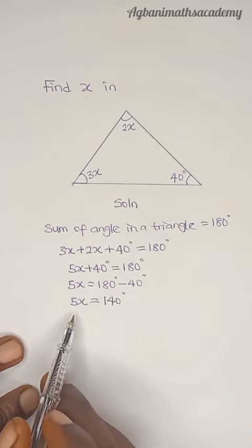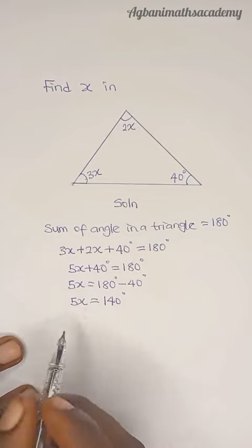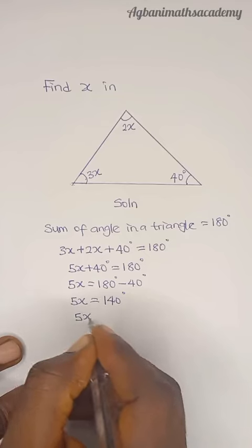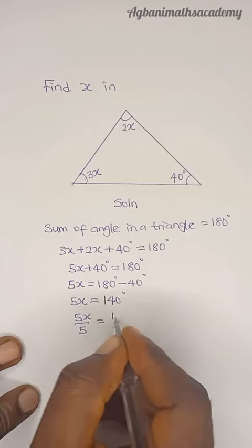In order to get the value of x, we are going to divide both sides by 5. So we have 5x all over 5 equals 140 degrees all over 5.